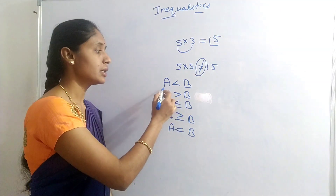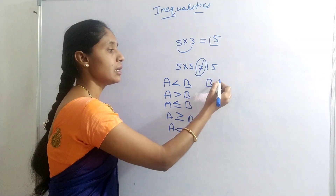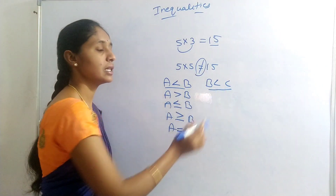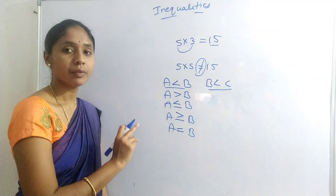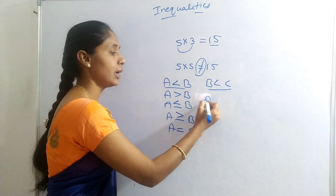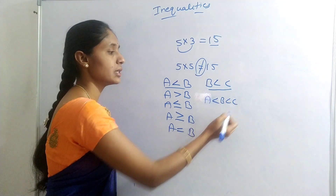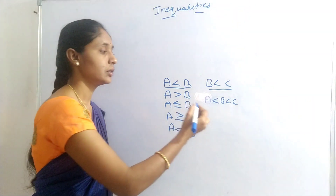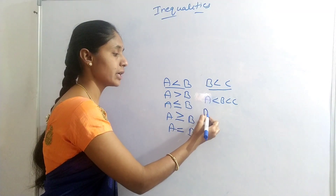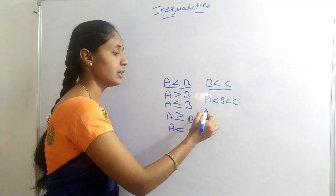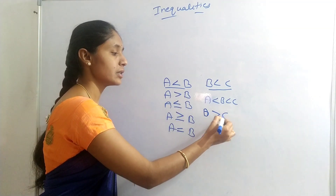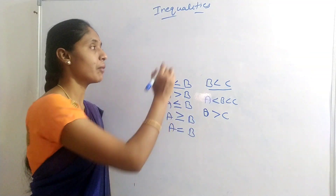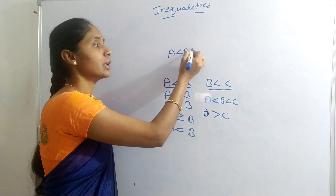Here is a statement: A less than B, and B less than C. Two statements are combined to form: A less than B less than C. If two statements are A less than B and B greater than C, combining them gives: A less than B greater than C.